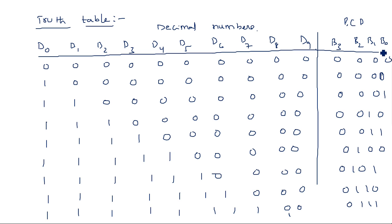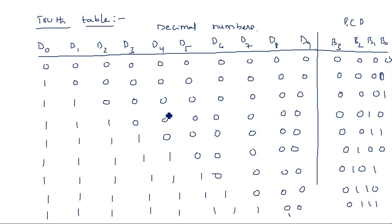The difference between this table and a normal encoder table is that in the normal encoder only one input is activated at a time. In the priority encoder, multiple inputs can be activated simultaneously, but only the highest-priority (highest-numbered) input is considered for the output, and the remaining are discarded.